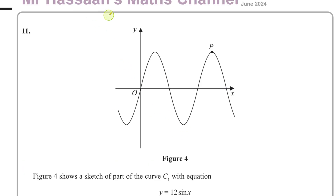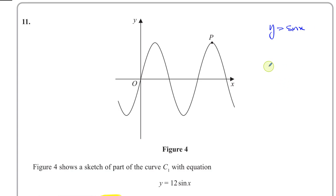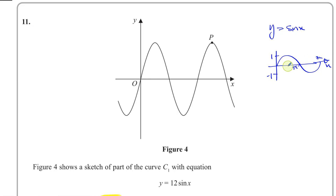If we think about the original curve y equals sine x, we should all know what it looks like — it has this shape. It reaches a maximum value of 1 and a minimum value of minus 1. This is π radians, this is 2π radians, like 180 to 360 degrees. It reaches its maximum at π over 2, and then its minimum at 3π over 2.